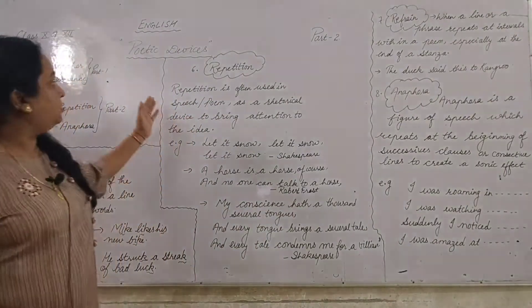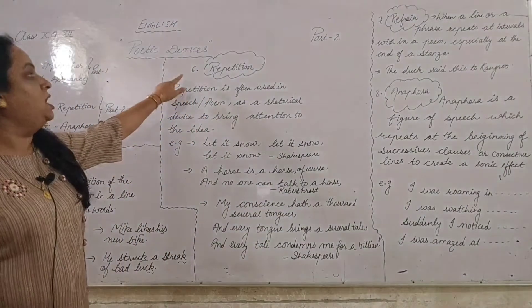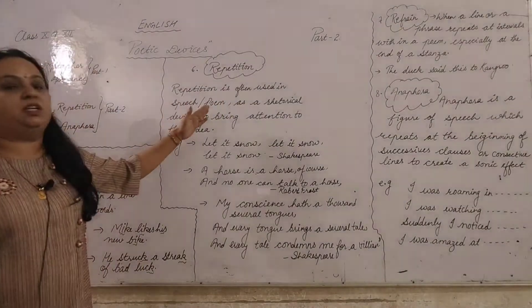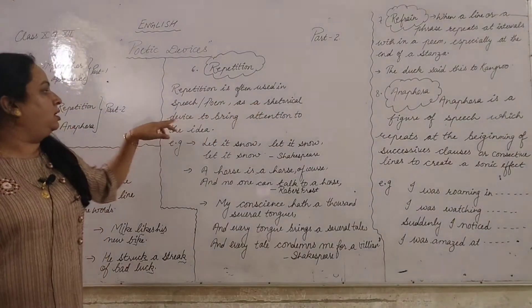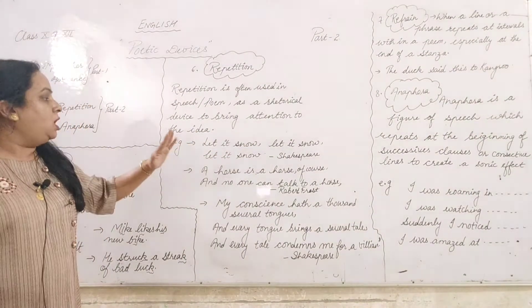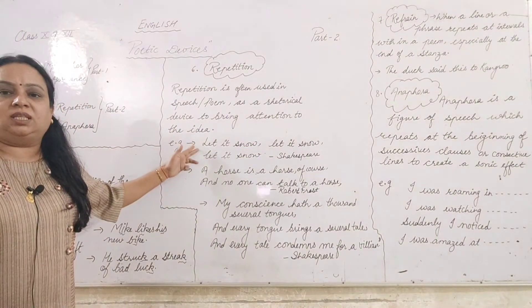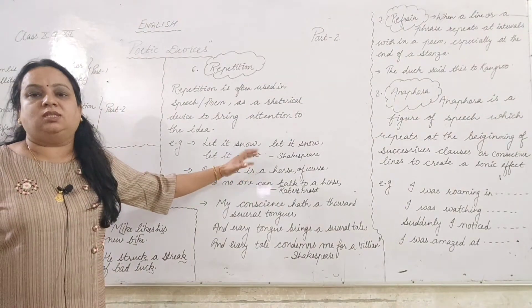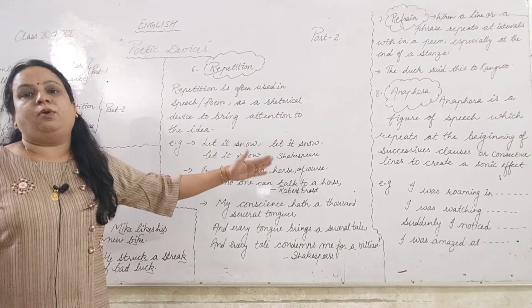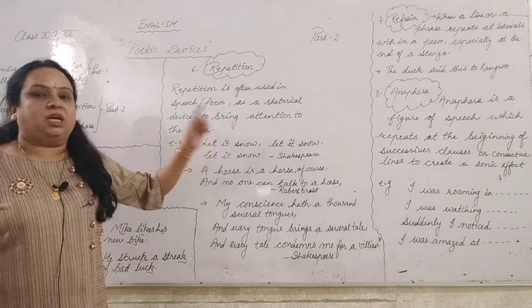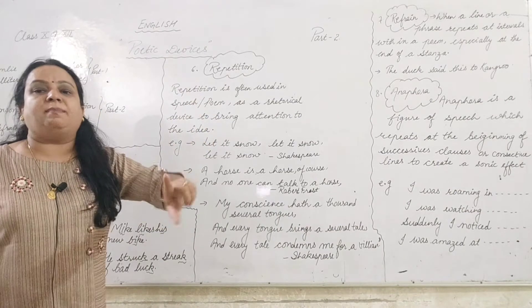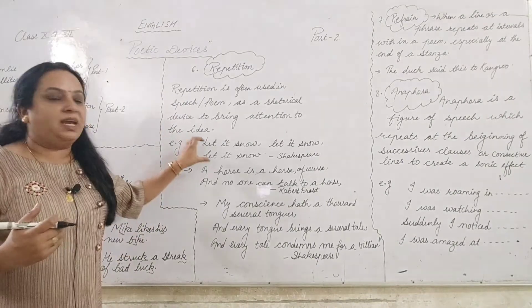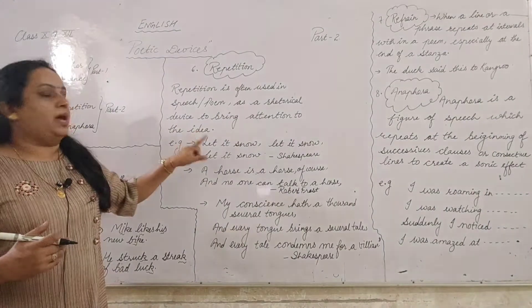The sixth poetic device — and the second for today — is repetition. Repetition is often used in speech or in a poem as a rhetorical device to bring attention to an idea. For example, here are lines from a poem: 'Let it snow, let it snow, let it snow.' When a word, phrase, or group of words is repeated again and again, that is known as repetition.